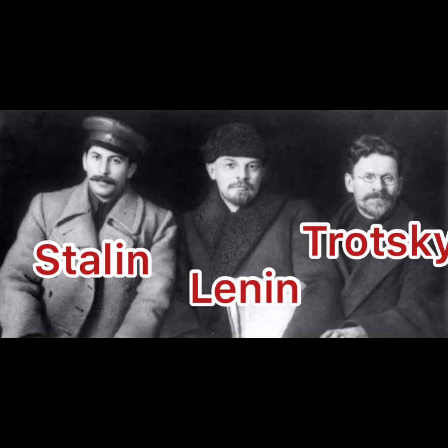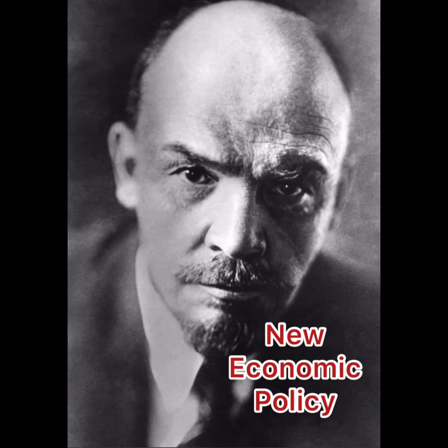From 1918 to 1921, Lenin started something called War Communism, where all the major industries in Russia — which he now called the Soviet Union — were under government control. This War Communism was a total failure, and by 1921 people were starving. So he decided to introduce a new policy called the NEP, the New Economic Policy, which introduced a little capitalism for the small farmer or small businessman, while most big factories remained under government control.